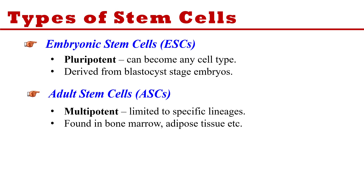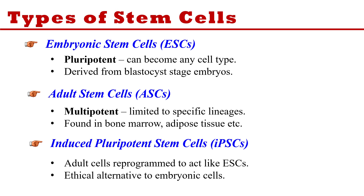The third type is induced pluripotent stem cells. When you reprogram adult cells to act like embryonic stem cells, these are called induced pluripotent stem cells. These are a very ethical alternative to using embryonic stem cells, because embryonic stem cells carry certain ethical issues. You can avoid those by inducing adult stem cells to behave like embryonic stem cells.